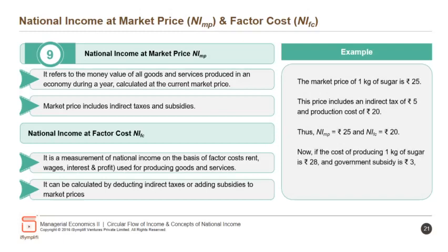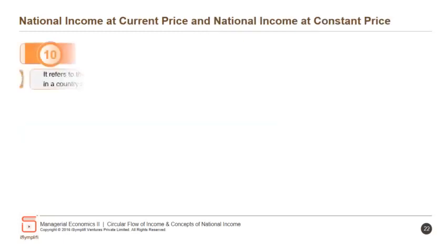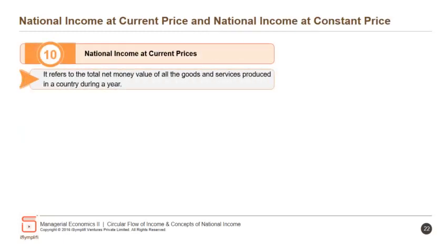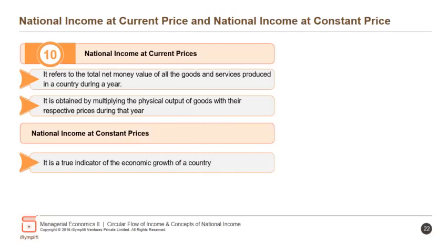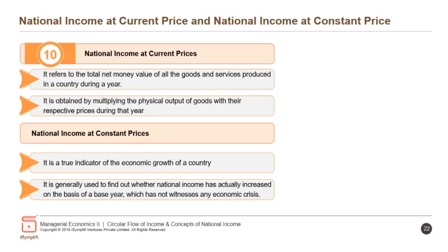If the cost of producing 1 kg of sugar is Rs. 28 and the government subsidy is Rs. 3, then NIMP = 25 and NIFC = 28. National income at current prices refers to the total net money value of all goods and services produced in a country during a year, obtained by multiplying the physical output of goods with their respective prices during that year. National income at constant prices is a true indicator of economic growth and is generally used to find out whether national income has actually increased on the basis of a base year which has not witnessed any economic crisis.